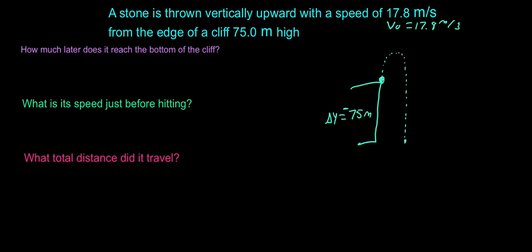So right here in time, our initial velocity is 17.8 meters per second. Right here, our velocity is zero, because at the top of an arc, our velocity would be zero.